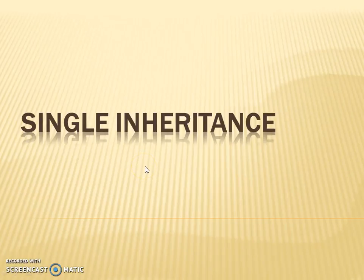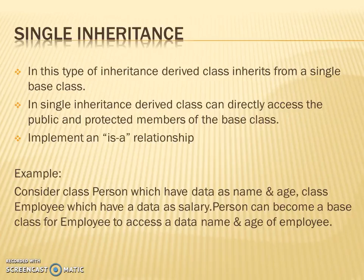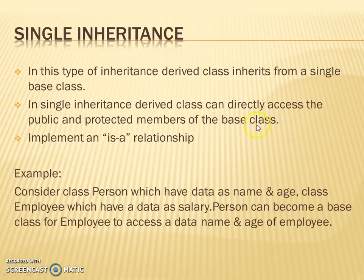Hello friends. As we have completed video 1 — that is introduction to inheritance — now we will start with our inheritance type: single inheritance. In single inheritance, the derived class inherits from a single base class, and can directly access the public and protected members of the base class.